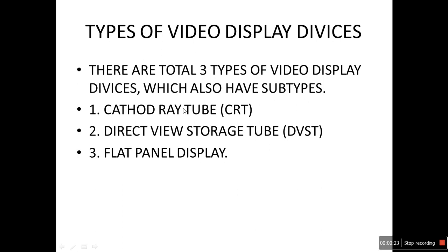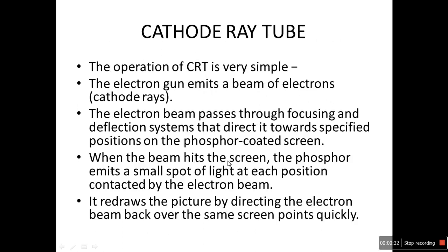The first one is cathode ray tube, also called CRT. The next one is direct view storage tube, also called DVST. And the third one is flat panel display. Now, the operation of CRT is very simple.